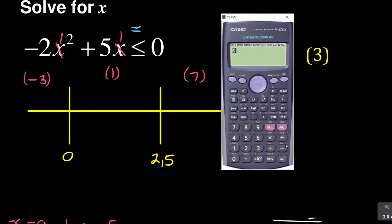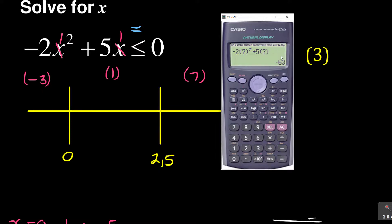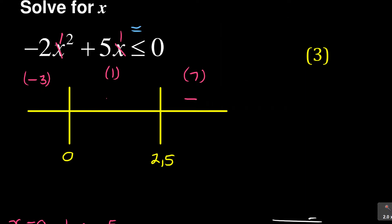Let's start with the center one. I'm computing minus 2 times 1 squared plus 5 times 1 — I'm interested in the sign. It's positive. Now let me try negative 3: the center one was positive, and with negative 3 I'm getting a negative. So it's negative, positive. Let's try 7 — if correct, I should get another negative. And yes, putting 7 in gives a negative. So the pattern is negative, positive, negative alternating across the regions.